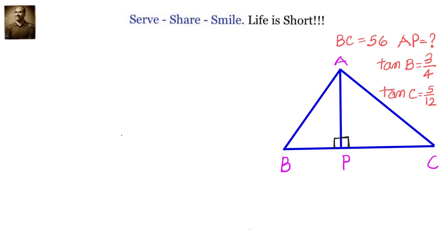There are a couple of ways to solve this problem. We'll go through both methods. In the first method, we understand that tan B is not equal to tan C, so BP and CP will not be equal. Let us divide 56 into two parts - one as X and another as 56 minus X. We need to calculate AP as H.